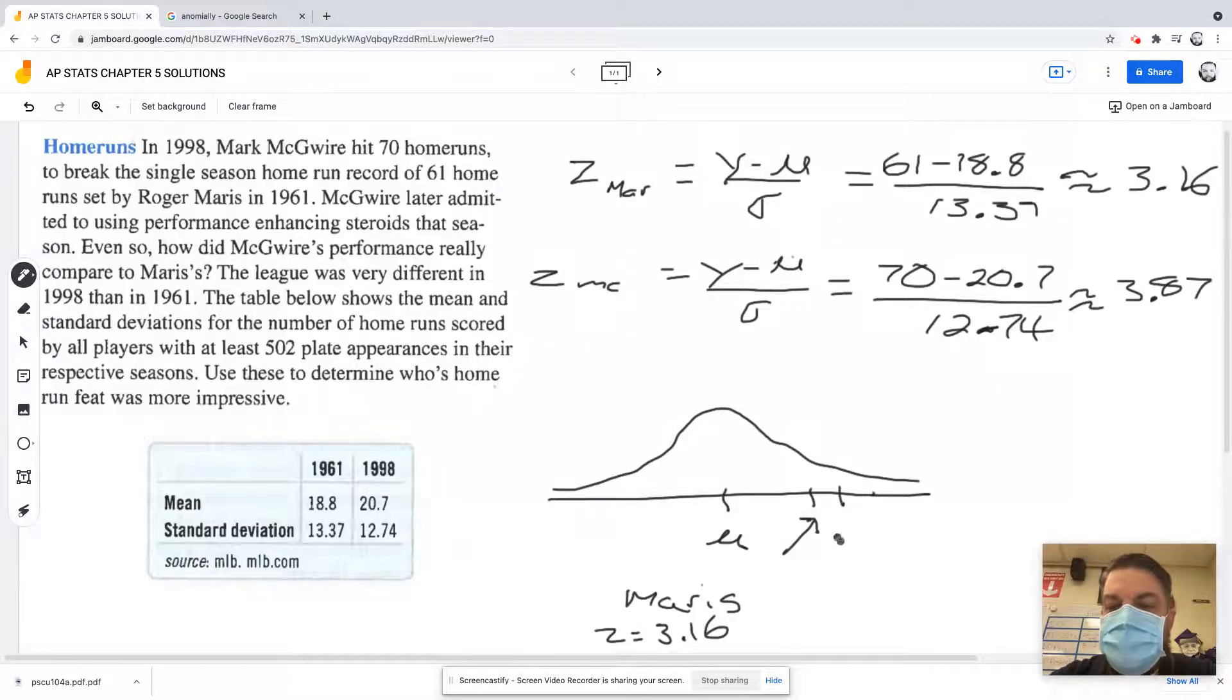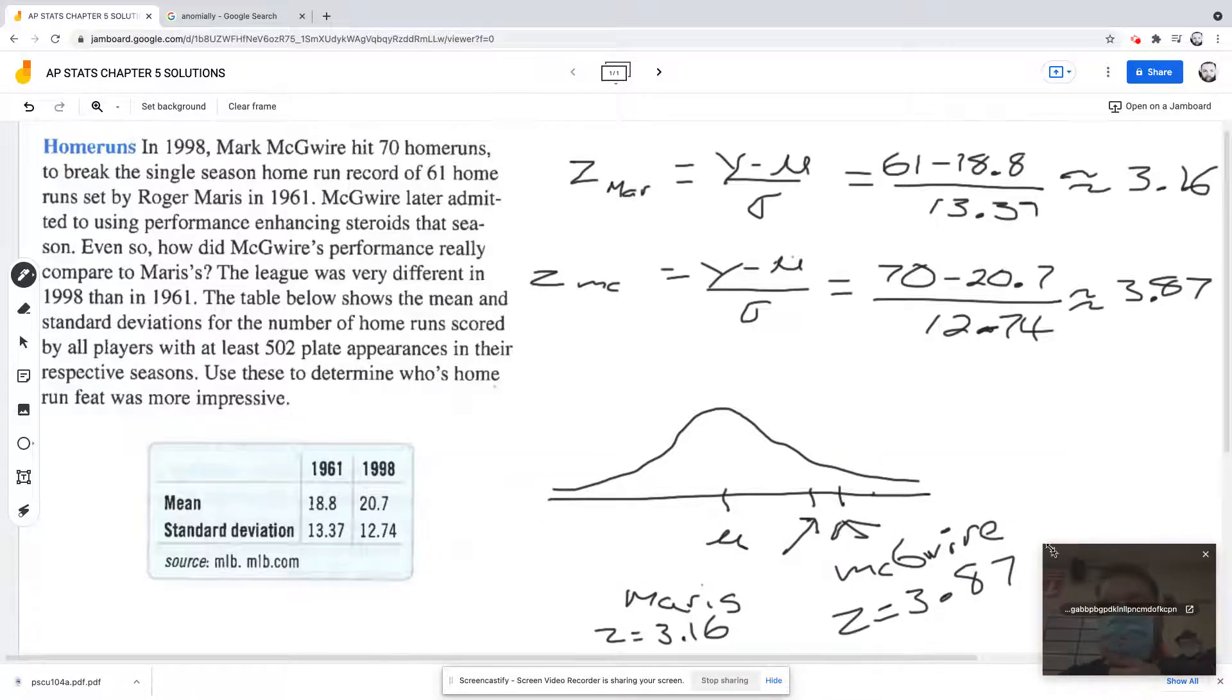But over here, that's where McGwire would be. And he has a z-score of 3.87, so he's a little bit further ahead.